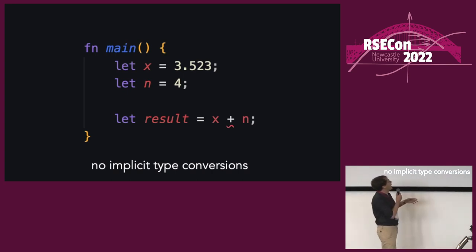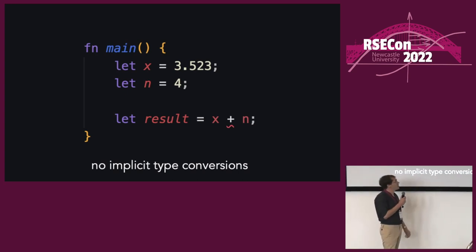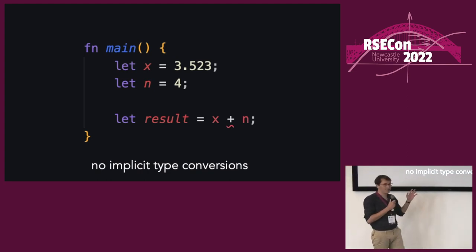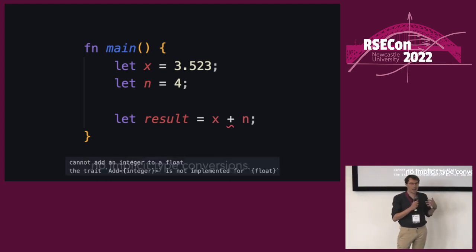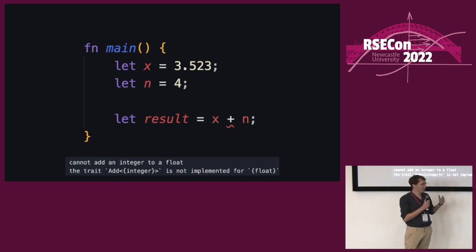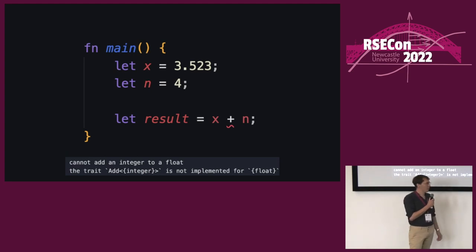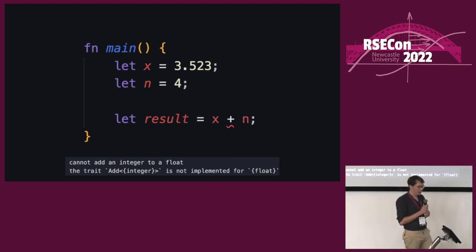Here we have X, which is a floating point variable, and N, which is an integer. Rust simply won't allow you to add those types implicitly together — you would have to explicitly convert one into the other type. If you try to compile this program, you'll get a compile error.